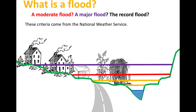A major flood is defined as one in which there is extensive inundation of structures and roads and significant evacuations of people and transfer of property to higher elevations. Major floods are pretty major events — they don't tend to happen all that often, but when they do, there's significant disruption associated with them.